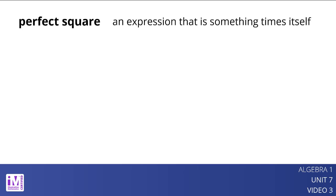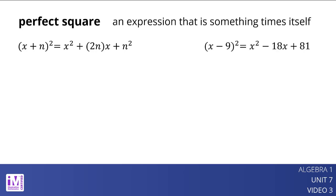In general, the quantity x plus n squared is equivalent to x squared plus 2n times x plus n squared. So, the quantity x minus 9 squared is equivalent to x squared minus 18x plus 81.